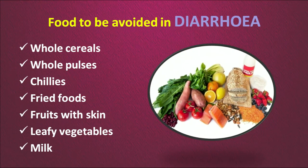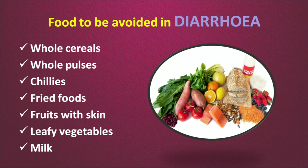Foods that should be avoided in case of diarrhea are whole cereals such as plain wheat chapati, whole pulses like rajma, black gram, chillies, fried foods, and whole fruits with the skin. Banana has to be eaten without skin, of course — everybody eats banana without skin. Also avoid leafy vegetables and milk. So curd is prescribed, not milk, during diarrhea.